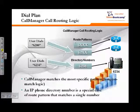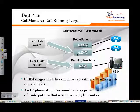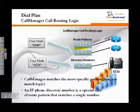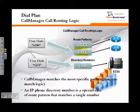For example, I have a route pattern 6XXX, right here, followed by another route pattern 6XXX. Each one of these route patterns are pointing to different gateways — one could be IP, one could be PSTN, it doesn't matter.